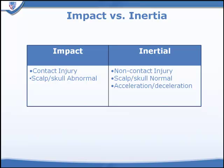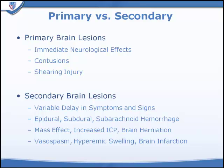We have to distinguish between impact and inertial injuries. It's easy to understand how a direct blow to the head or skull can damage the underlying brain, but we must remember that inertial forces like acceleration or deceleration, even of a restrained occupant of a motor vehicle, can damage the underlying brain without producing any lesions visible on the outside. Primary brain lesions, which are difficult to see on acutely performed CT, are classically associated with an immediate neurologic deficit — primarily contusions and deep shearing injuries.